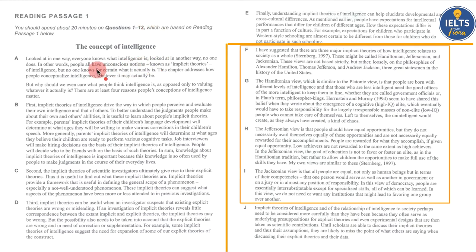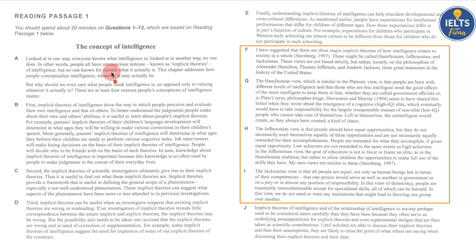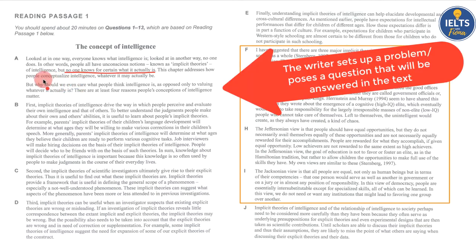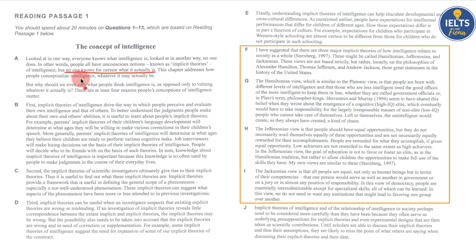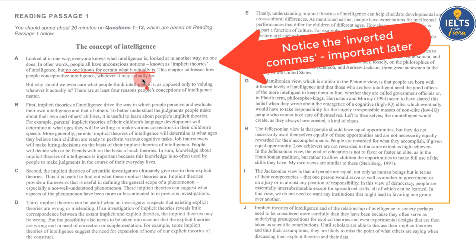We can see in the first paragraph it tells us it's going to talk about the concept of intelligence, and as always, there's a problem — no one knows for certain what it actually is. It says 'this chapter addresses how people conceptualise intelligence.' The same paragraph says that people have unconscious notions and defines the term 'implicit theories.' These two terms — implicit and unconscious — tell us that we have theories about intelligence that maybe we don't express.